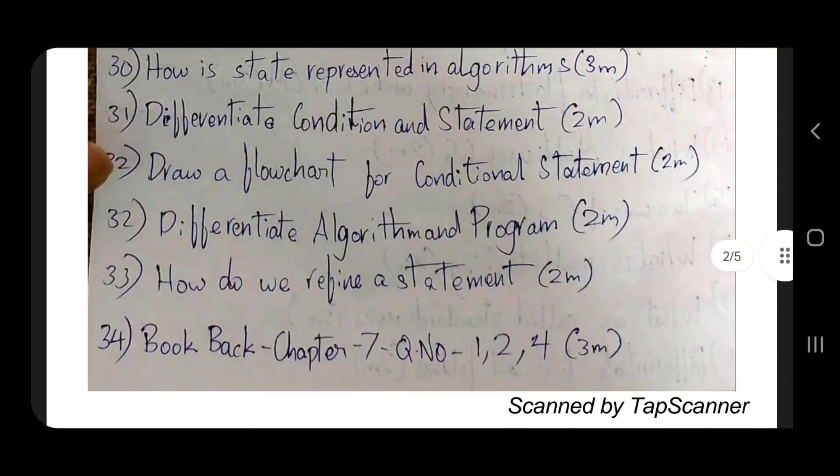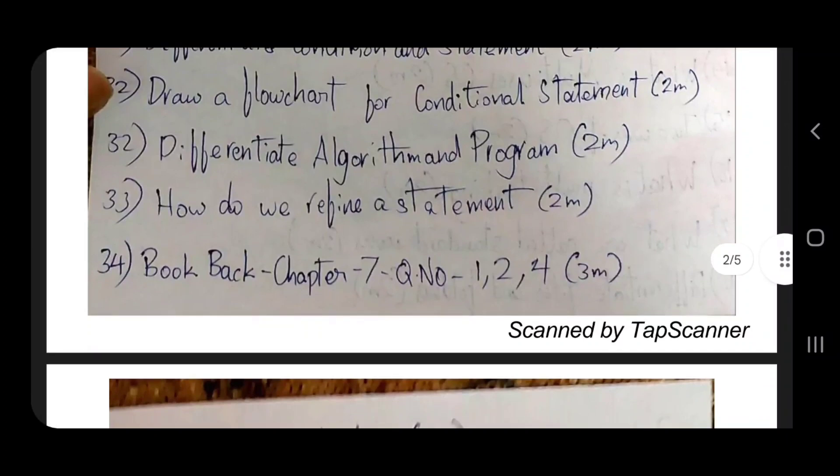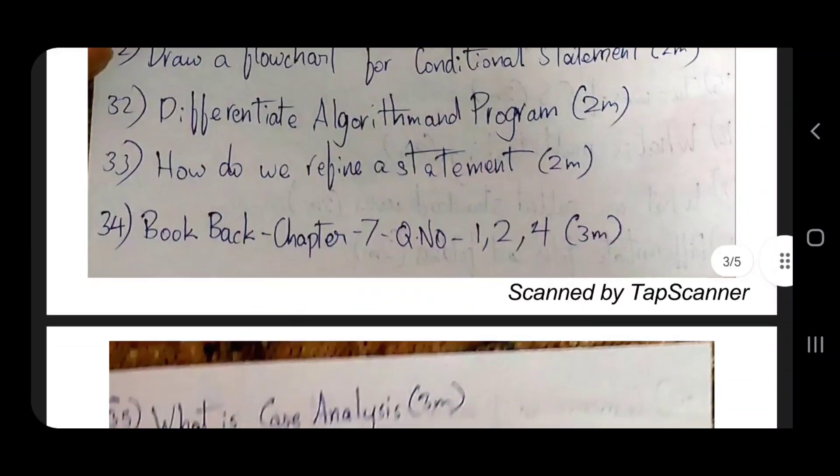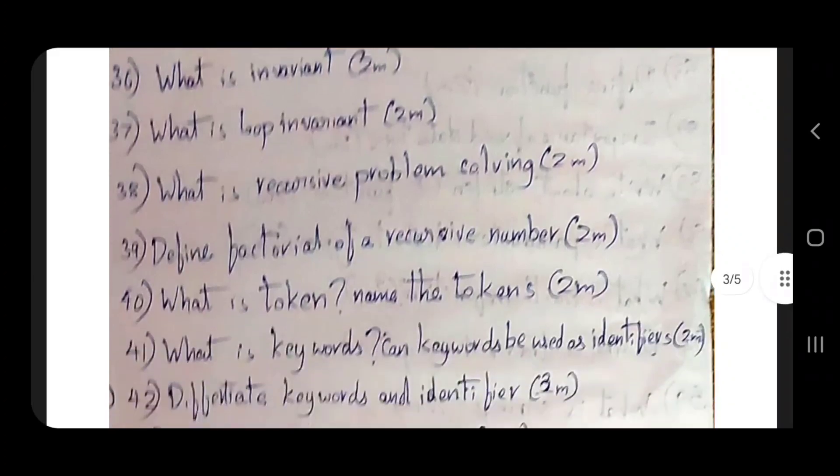Draw a flowchart for conditional statement, 2 mark. Differentiate algorithm and program. How do we refine a statement? Look back, chapter 7, question number 1, 2, 4. What is case analysis, 3 mark? What is invariant? What is loop invariant? What is recursive problem solving, 2 mark?